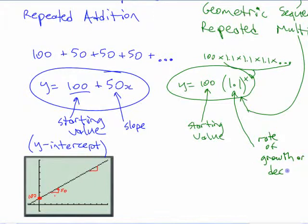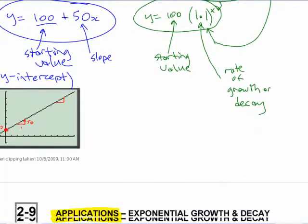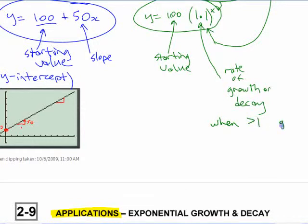You can't really talk about slope because the slope's different at every point, but it's the same thing. It's affecting how steep the graph is. In the same way as the linear function, it affects how steep the graph is. The larger the number, the more quickly it goes up. When it's greater than 1, it's growth.